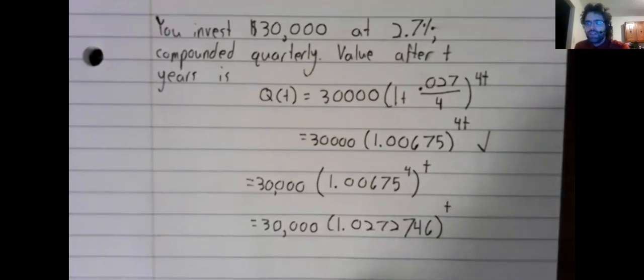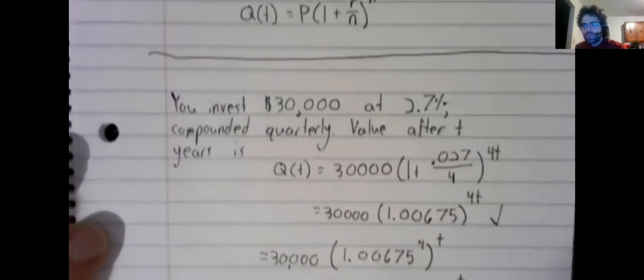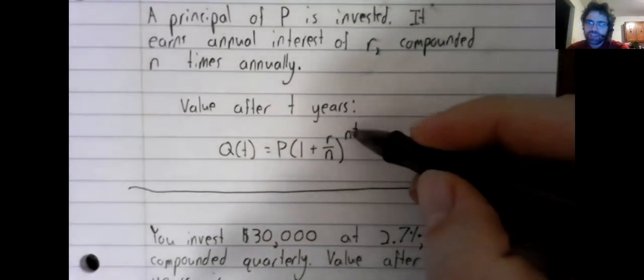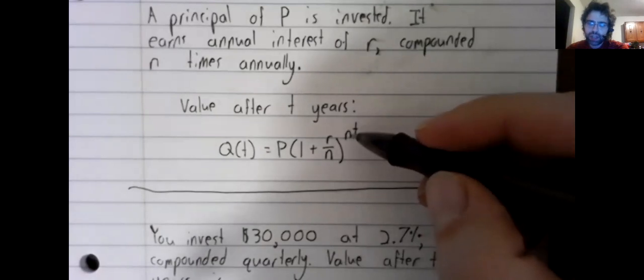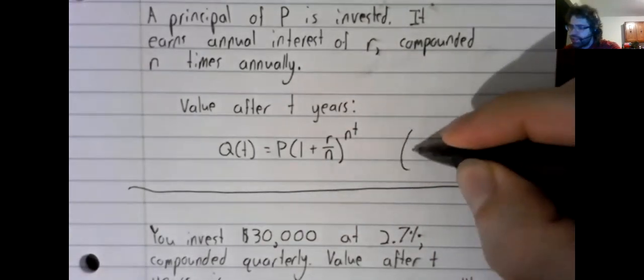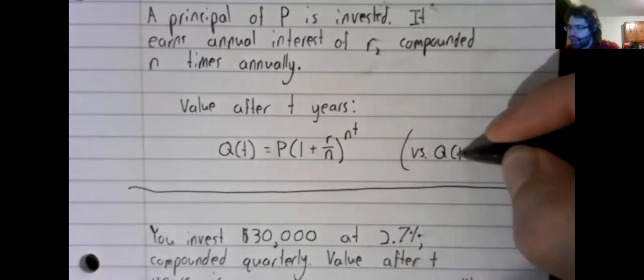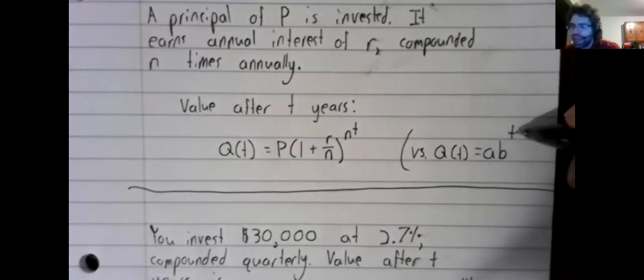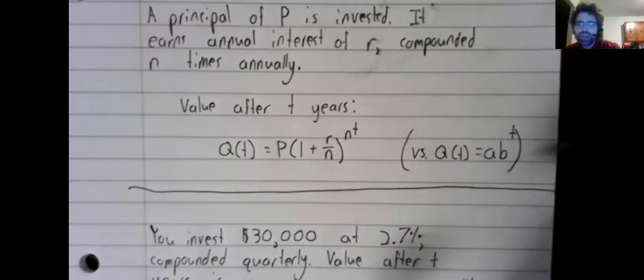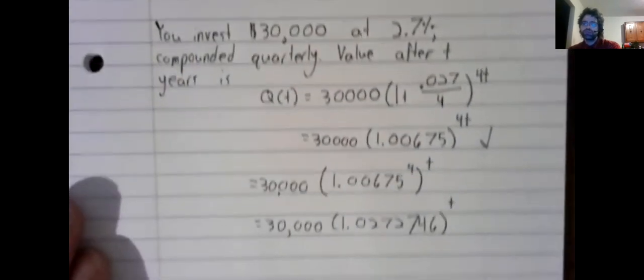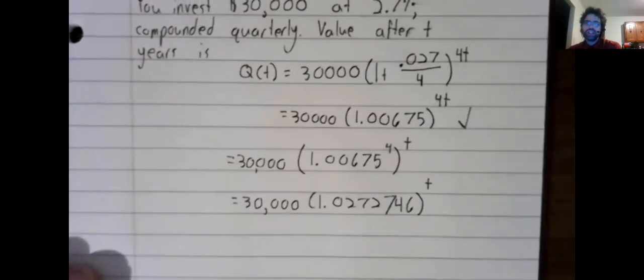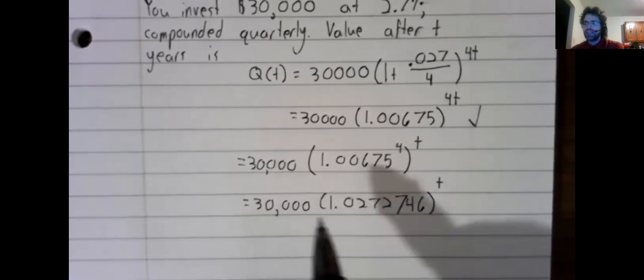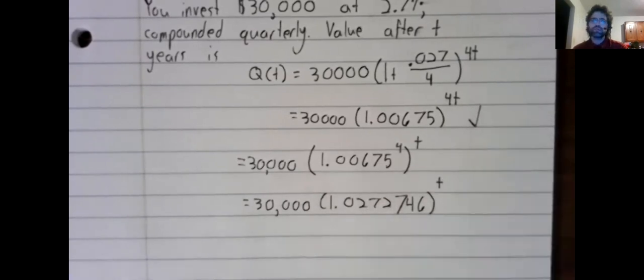So even though our formula for compound interest has this N up here, and even though when we defined exponential growth there was no N to be found up here, that isn't a genuine problem. If you wanted to, you could take something like this and rewrite it as A times B to the power of T.